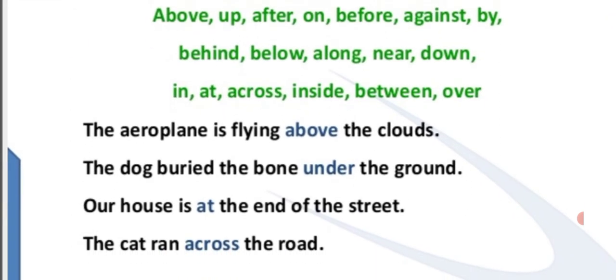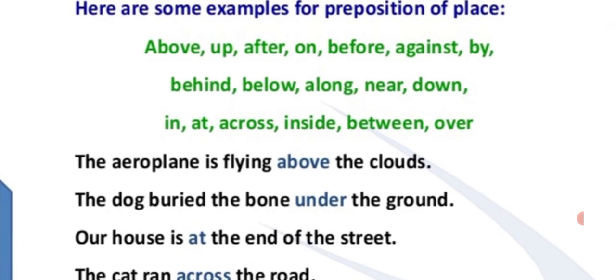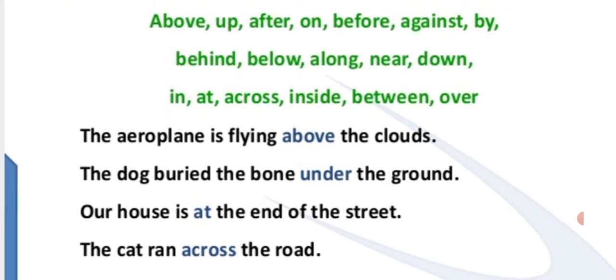Sentences using prepositions of place: 1. The aeroplane is flying above the clouds. 2. The dog buries the bone under the ground. 3. Our house is at the end of the street. 4. The cat ran across the road.